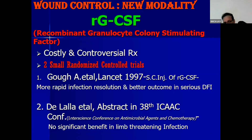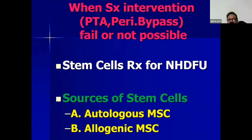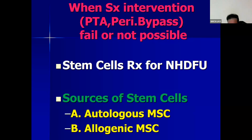Recombinant granulocyte colony-stimulating factor came into the limelight earlier but unfortunately is not very effective, is costly, and different trials have shown controversial results, so it is not being used regularly. When surgical interventions like angioplasty or peripheral bypass fail, or are not possible due to reasons I mentioned, we can do stem cell therapy. Sources of stem cells are autologous mesenchymal stem cells or allogeneic — autologous means from the same patient.